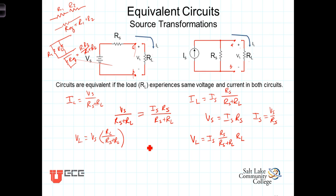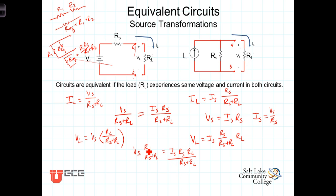Setting the two voltage expressions equal to each other, we have V_S times R_L over R_S plus R_L equals I_S times R_S times R_L over R_S plus R_L. The denominators are the same, so the numerators must be equal: V_S times R_L equals I_S times R_S times R_L. This again gives us V_S equals I_S times R_S, or equivalently I_S equals V_S over R_S — exactly the same relationship we found from the current analysis.